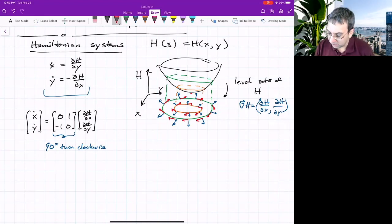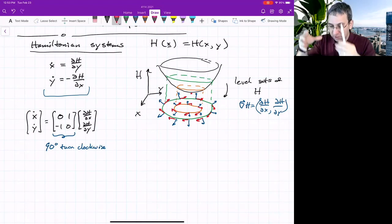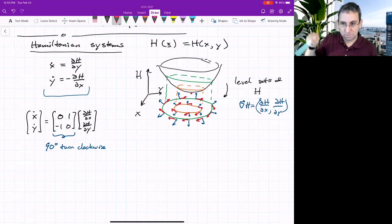But what it means is you'll notice when you've got level sets of h, the gradient is normal to it. But then if you rotate 90 degrees, you've got vectors that are actually along level sets of h. So the nice thing about Hamiltonian systems is once you've plotted the level sets of h, trajectories will actually follow the level sets.